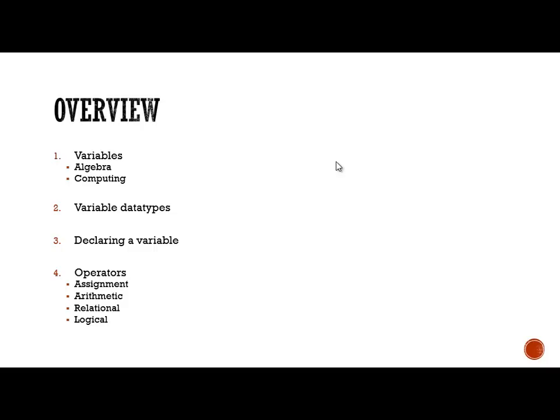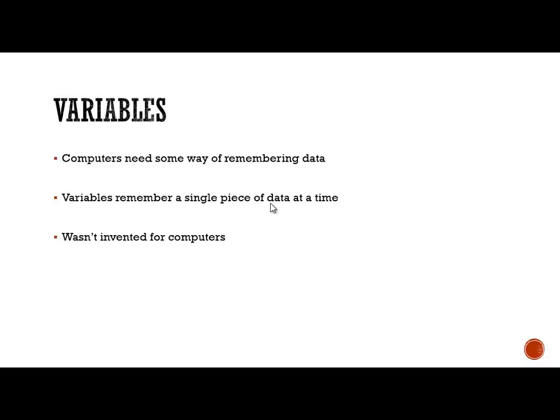About half of this video will be practical. Variables really, as I said before, are needed to remember some data. The last program we made wasn't interactive at all, and computers need some way of remembering things — variables are how we do it. One variable can remember one piece of data at a time. If we want to remember two things, we make two variables. If we want to remember ten things, we make ten variables.